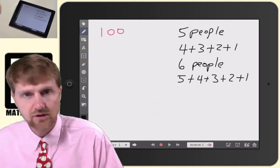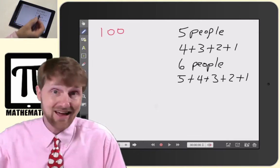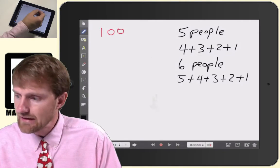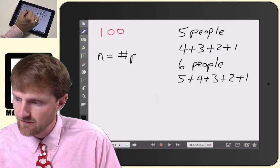If we had seven, we'd go six plus five plus four plus three plus two plus one. So we would see that and then we would establish a rule.